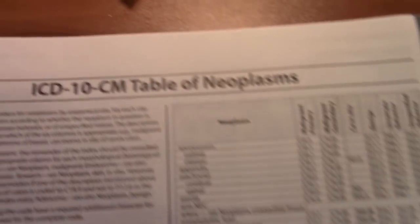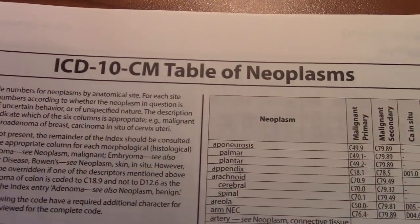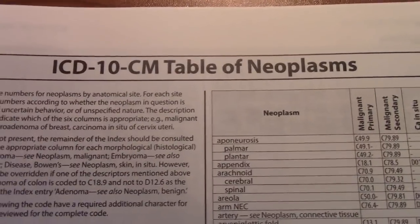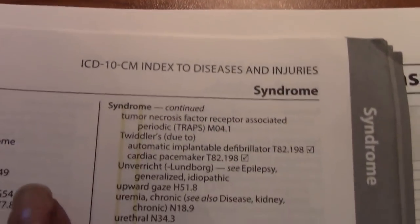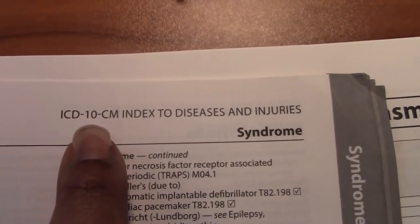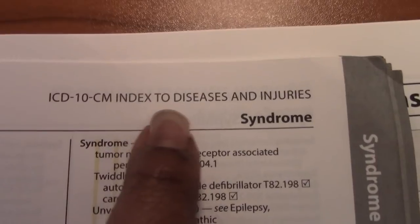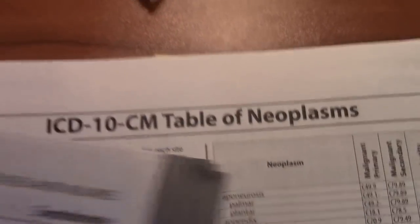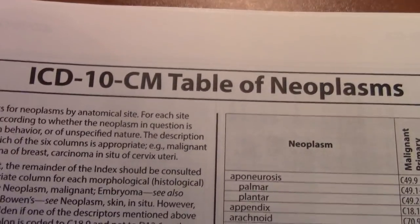We're going to need our codebooks for this one. When you pull your ICD-10-CM codebooks out, go to the back to your ICD-10-CM table of neoplasms. That's found right behind — notice how you tell which part of the book you're in by the top. ICD-10-CM index to diseases and injuries — right behind that is where you'll find your ICD-10-CM table of neoplasms.